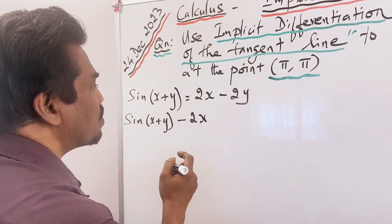This value of dy/dx gives the slope. We have to find dy/dx at the point (π, π). Substituting x = π and y = π: dy/dx = (2 − cos(π + π)) / (cos(π + π) + 2) = (2 − cos(2π)) / (cos(2π) + 2). cos(2π) = cos(360°) = 1, so dy/dx = (2 − 1) / (1 + 2) = 1/3. The slope m = 1/3.